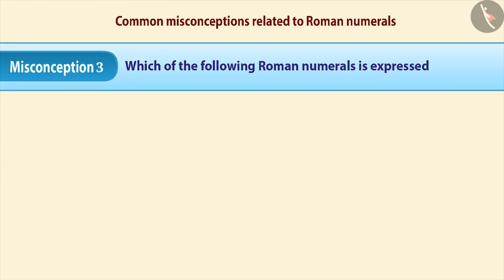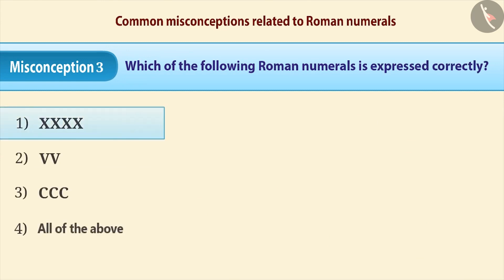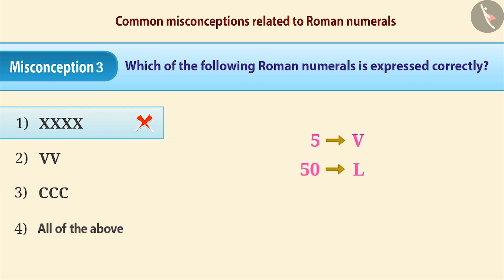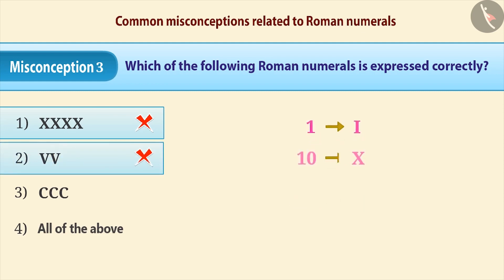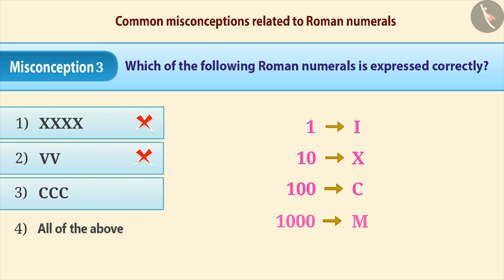Misconception 3: Which of the following Roman numerals is expressed correctly? In option 1, the symbol of 10 is repeated 4 times — but no Roman symbol is repeated more than 3 times, so option 1 is incorrect. Due to lack of understanding that symbols of 50 and 500 are never repeated, option 2 is considered correct, but it is also incorrect. The correct understanding is that only the symbols of 1, 10, 100 and 1000 are repeated, and only up to 3 times. Therefore option 3 is the correct answer. Option 4 is also incorrect, as the rules are neglected when assuming all Roman-looking options must be correct.